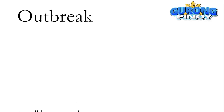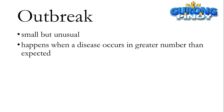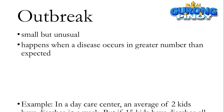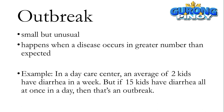Outbreak — this is a small but unusual health occurrence. This happens when a disease occurs in greater number than expected. Example: in a daycare center, an average of two kids have diarrhea in a week, but if 15 kids have diarrhea all at once in a day, then that's an outbreak.